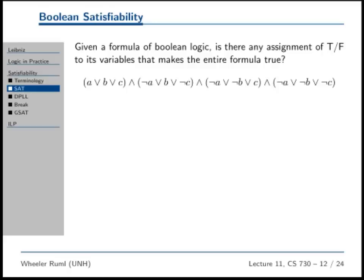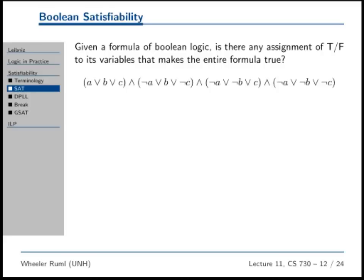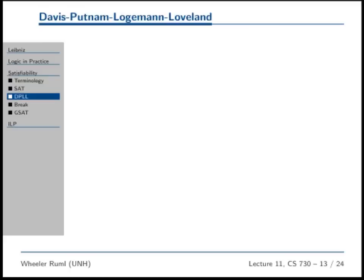People treat this as a CSP. What algorithm do we use for solving CSPs? No, alpha-beta is for games. Forward checking? Yeah, forward checking is a way of reducing the domains as we go along so that we cut down on the size of the tree, but the basic search strategy is depth-first search.